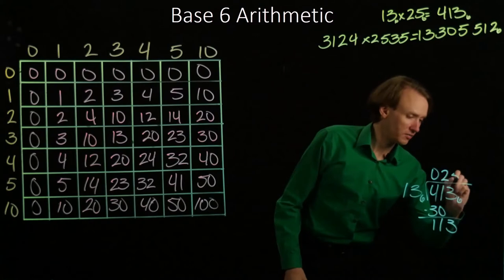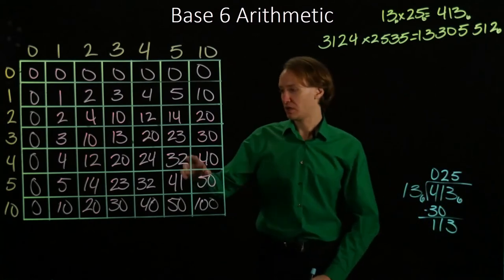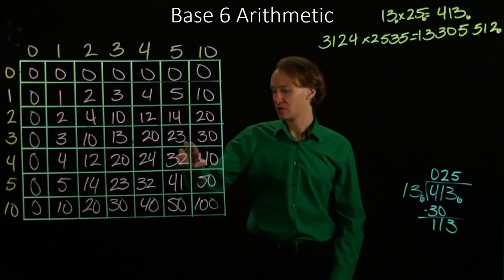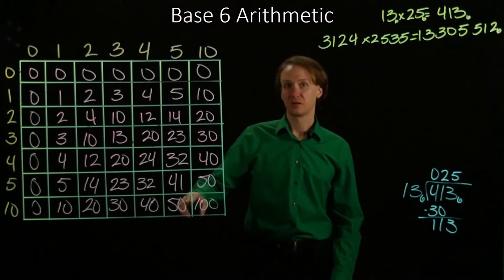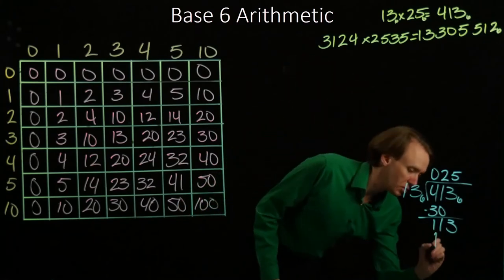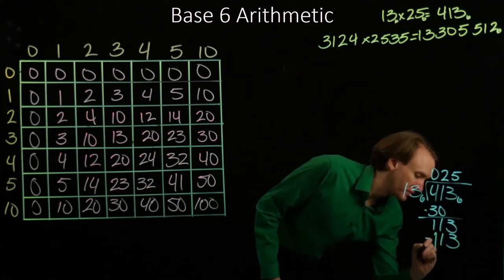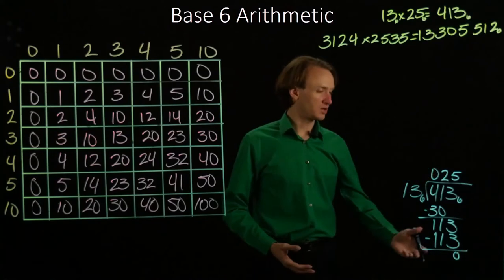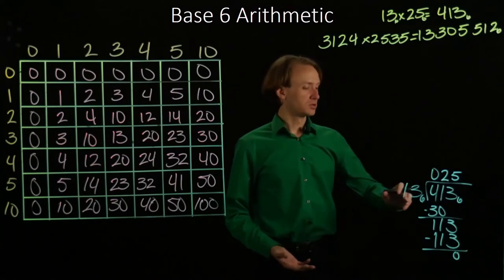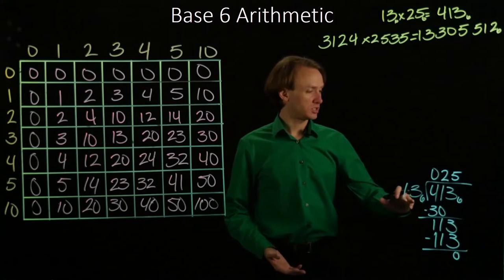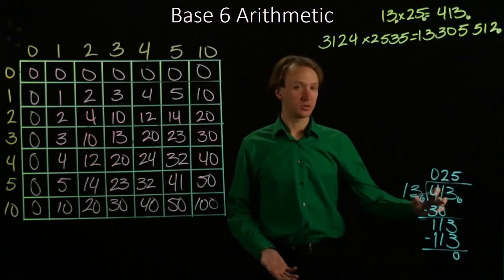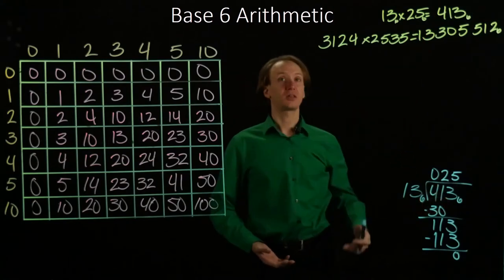So if I have 5 times 13, that gives me 23 plus 50, which is 113. And I'll have a remainder of 0 here. So 13 times 25 gives me 413, which is exactly what I had before.